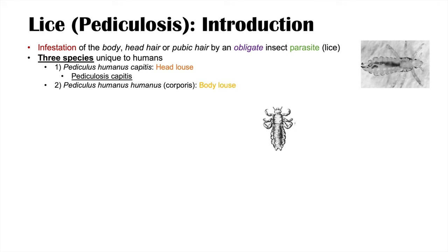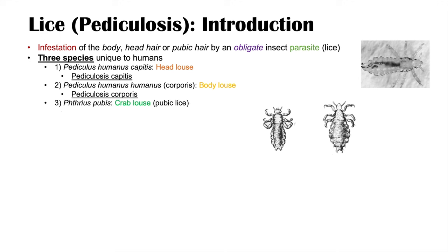The second species is Pediculus humanus humanus, also called Pediculus humanus corporis, which is the body louse. Having this type of lice leads to the condition known as pediculosis corporis. The third species is Pthirus pubis, which is the crab louse or pubic lice.